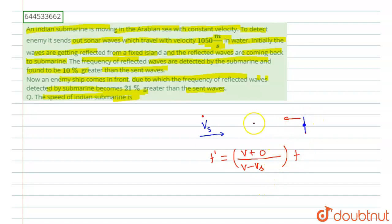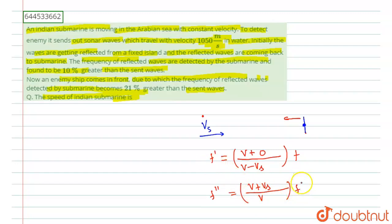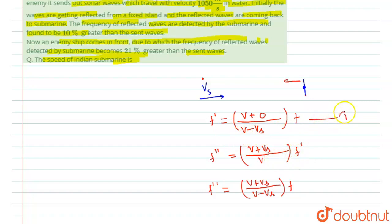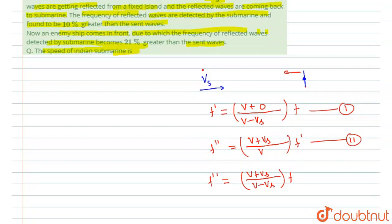Now in the second case when the wave comes back, the submarine is the observer and the island is the source. So F double dash is equal to V plus Vs divided by V, multiplied by F dash as the source frequency. Substituting the F dash value from the first equation into the second equation, we get F double dash equal to V plus Vs divided by V minus Vs, multiplied by F.